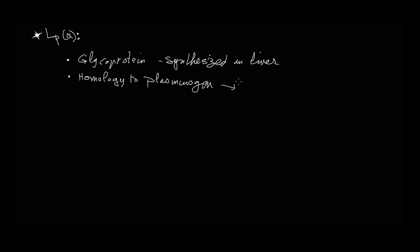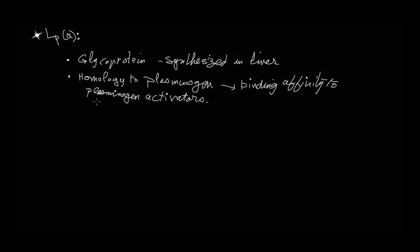Lp(a) is a glycoprotein and it is synthesized in the liver. It has homology to plasminogen, which means it has a binding affinity to plasminogen activators. To explain this: in the coagulation system there is a homeostasis between the system which carries out coagulation and the system which breaks down the blood clot. Plasminogen and tissue plasminogen activators are part of the second system — the system which breaks down the blood clot.